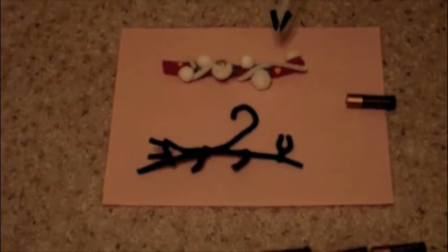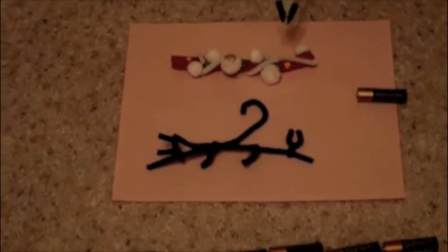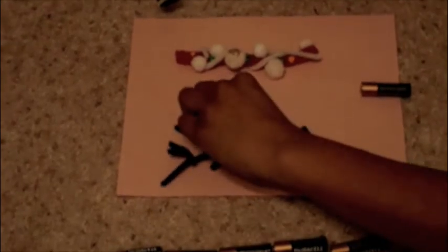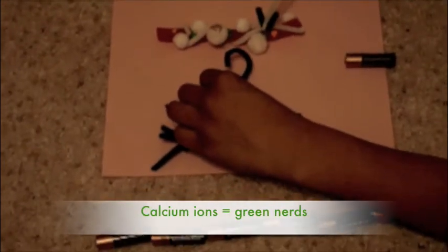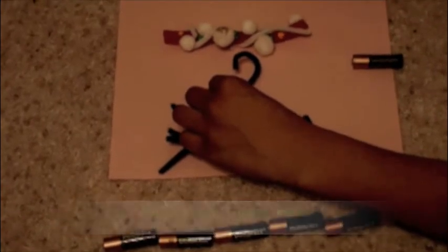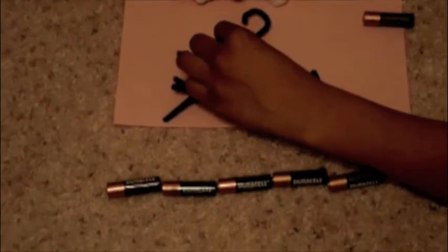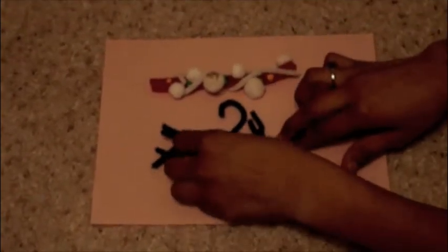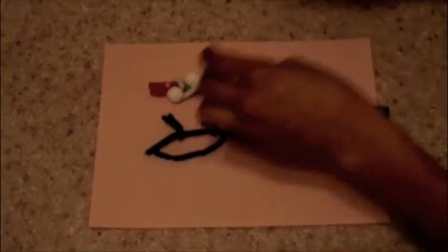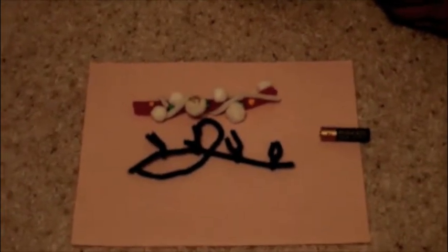Actin and myosin molecules are chemically attracted to one another. The thick filaments are made up of myosin molecules. The calcium ions released from the SR allow tropomyosin to shift, which exposes the active sites of actin molecules. This allows the thin filaments and the myosin heads to angle towards one another. When they bridge the gap between the myofilaments, the myosin heads are called crossbridges.